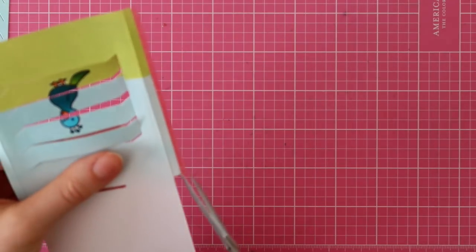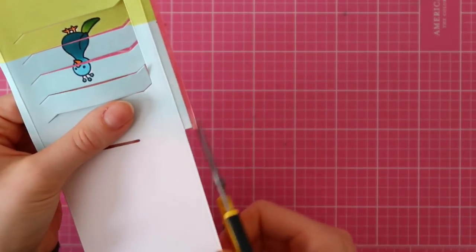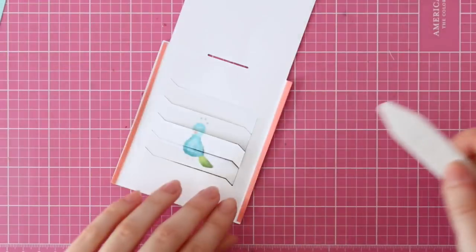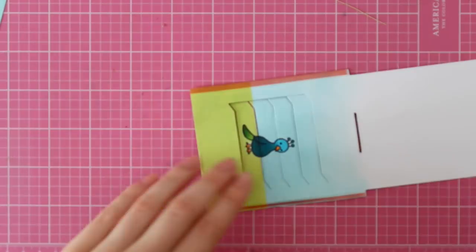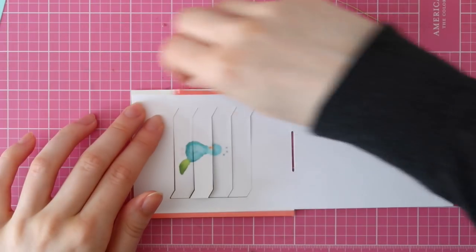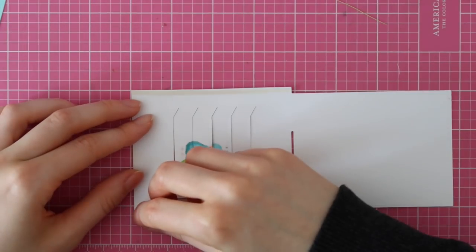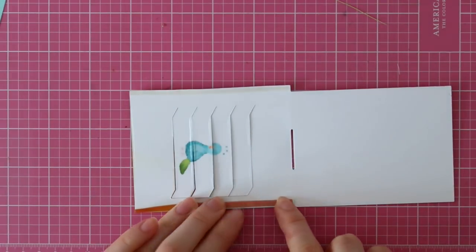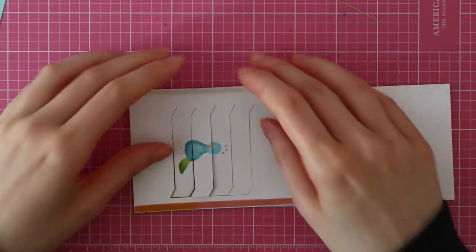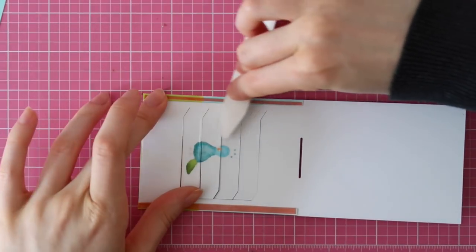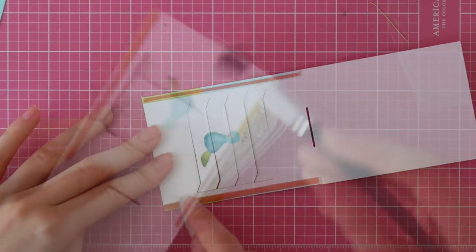I guess you could also use liquid adhesive or just a tape runner, but I find that the tape adhesive works a little bit easier for this particular design. Now that I applied my tape adhesive to both sides, I'm using my bone folder just to burnish that adhesive tape, and then I am removing the backer sheets on the back side of my Magic Picture Changer card. Then I'm going to fold those little tabs in the back side of the die.